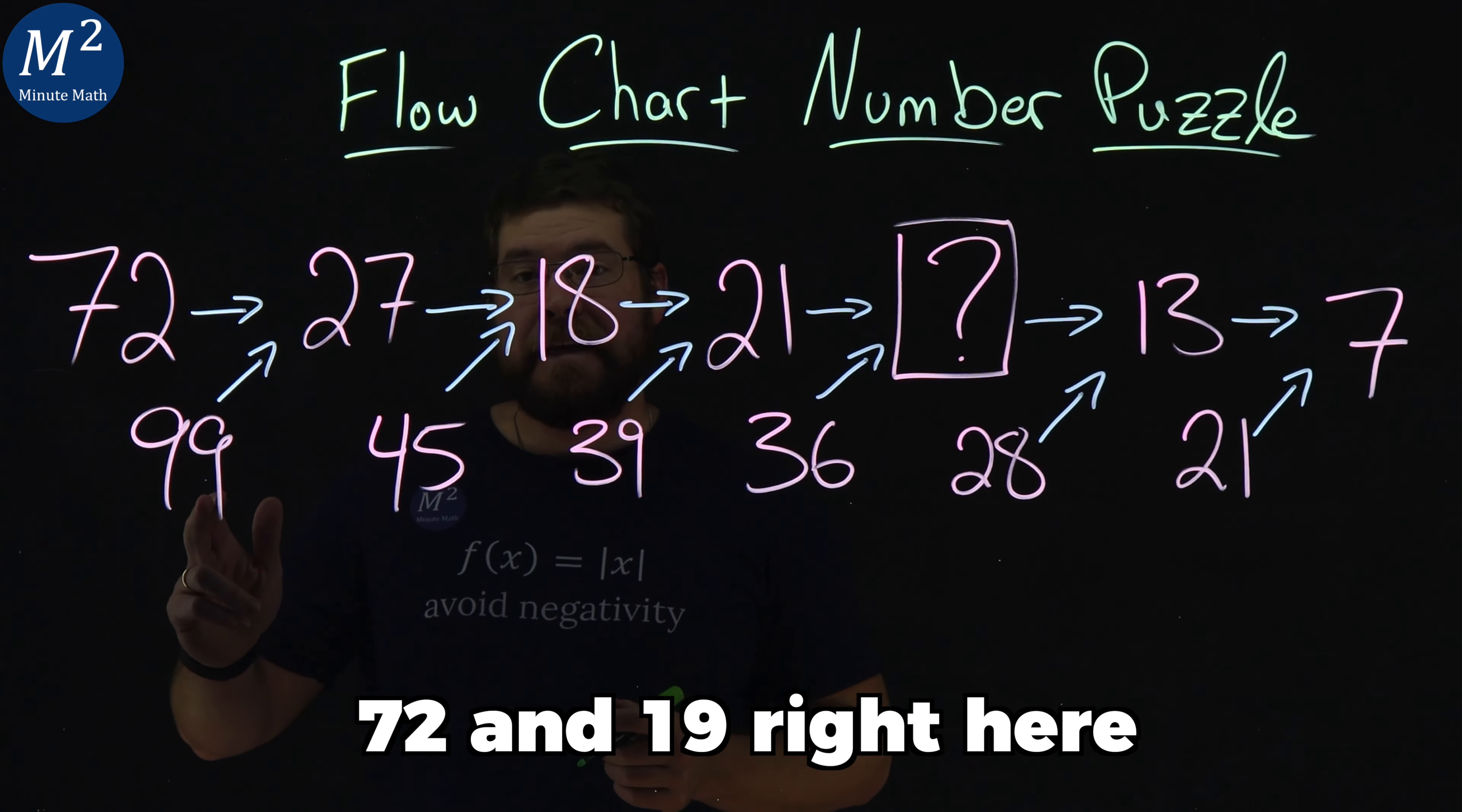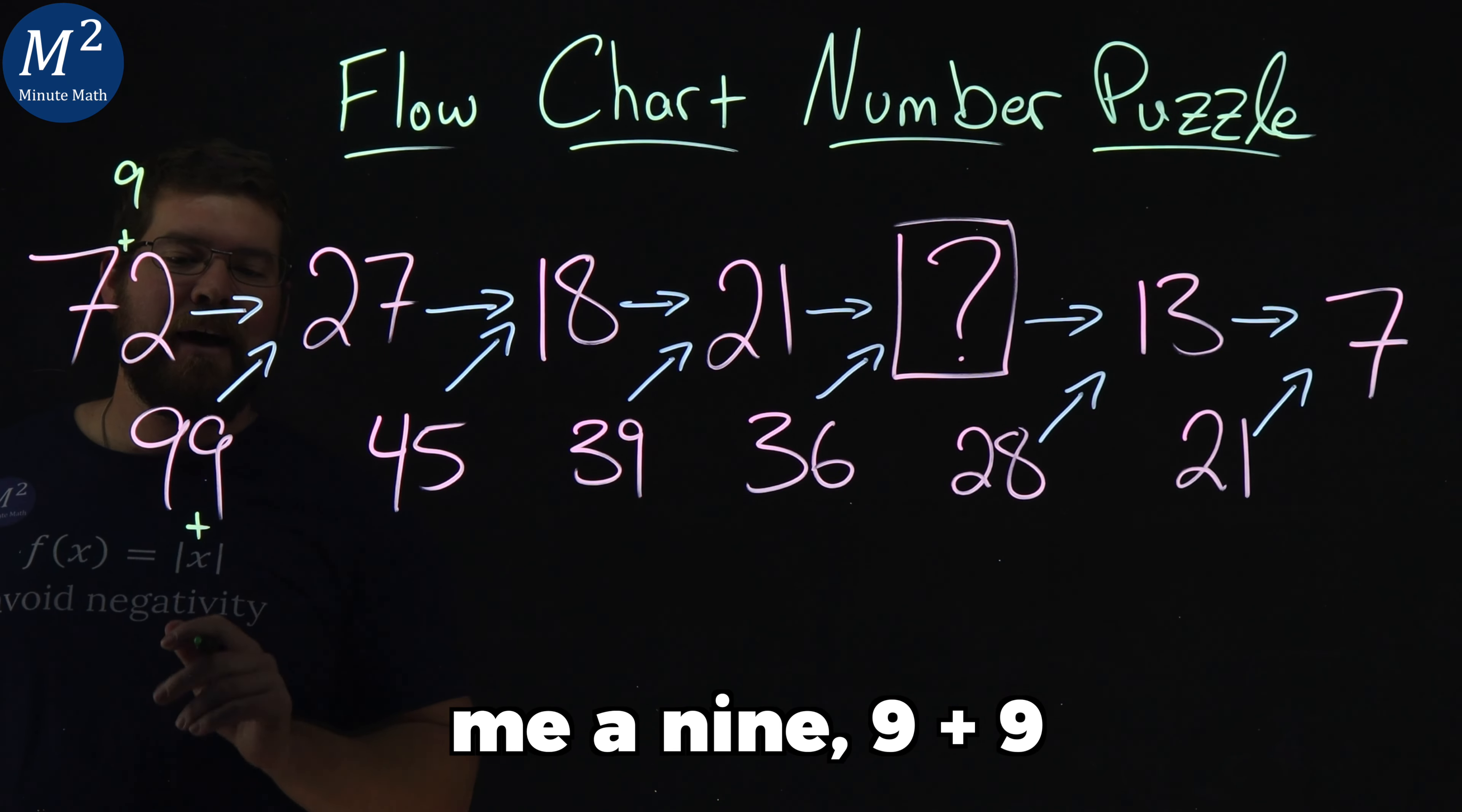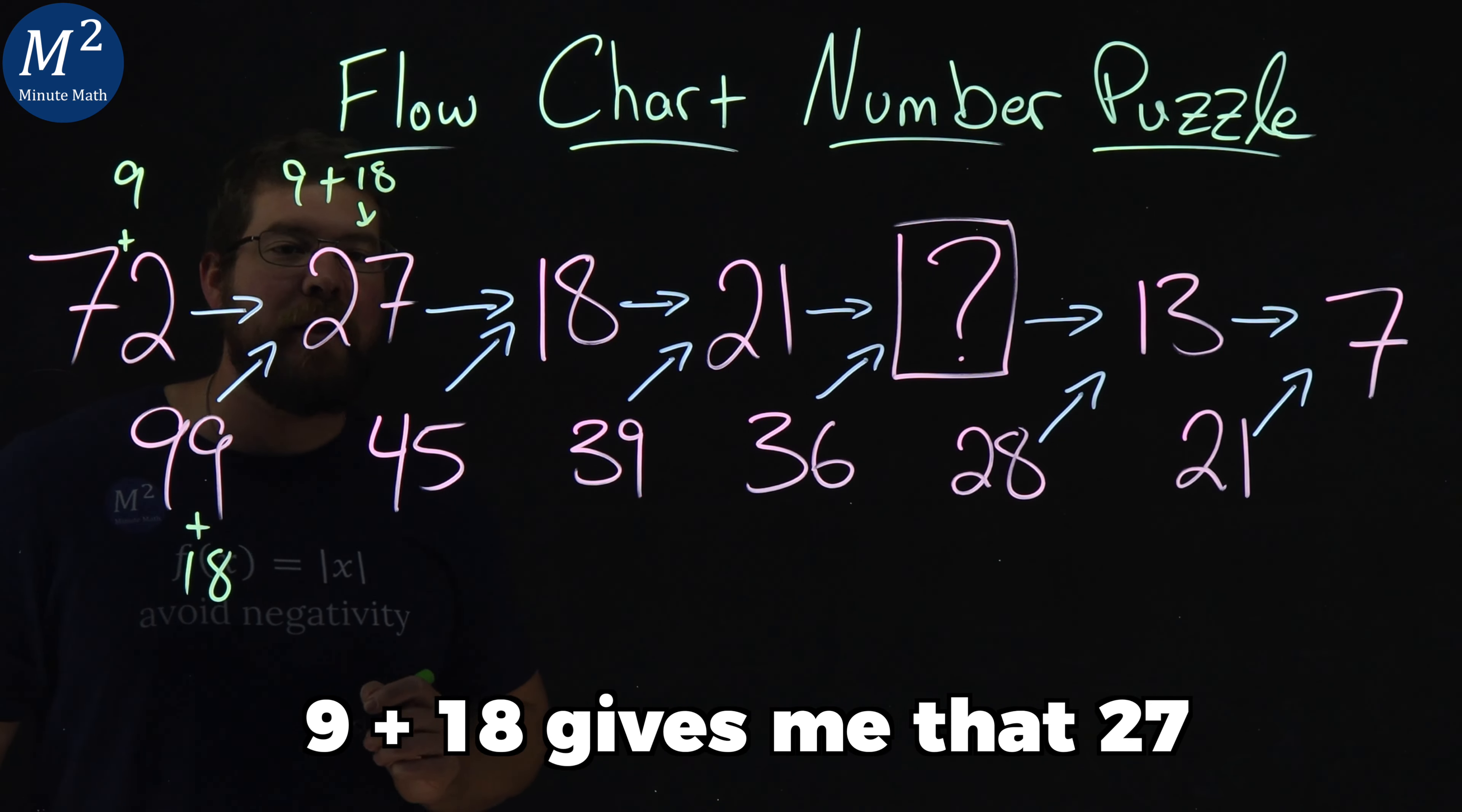72 and 99 right here. 7 plus 2 gives me a 9, 9 plus 9 is 18, 9 plus 18 gives me that 27.